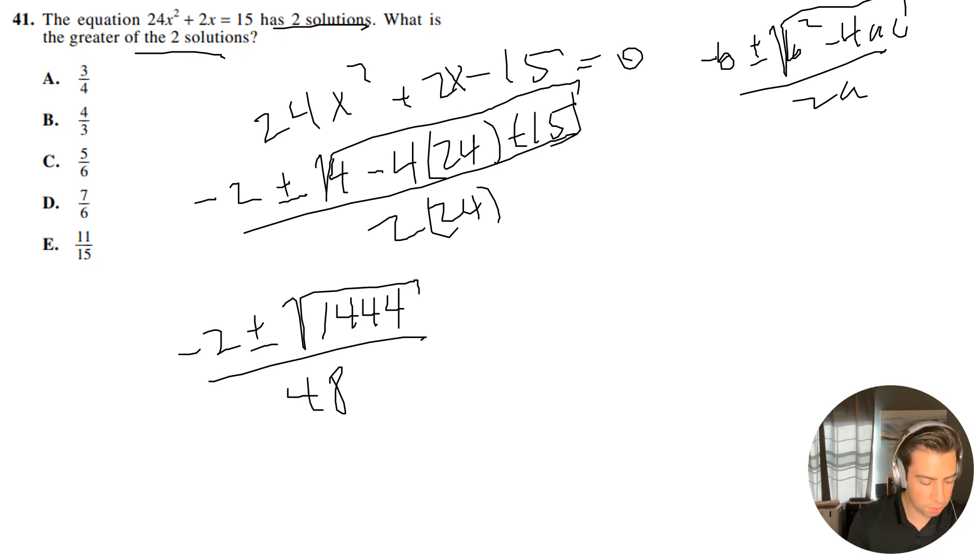Now what is the square root of 1,444? Let's see, I'm actually kind of curious myself. All right, so it is 38. So it's going to be -2 ± 38 over 48.